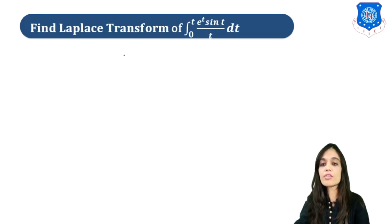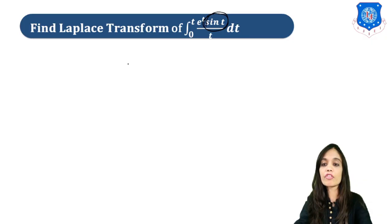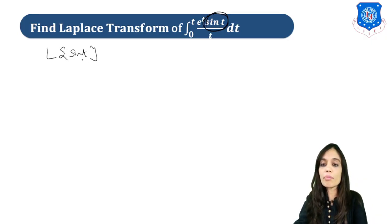Let us understand this using examples. We have to find the Laplace transform of the integral from 0 to t of e raised to t times sin(t) upon t. Ignore everything and just find the Laplace of sin(t) first — go step by step, this is an important problem. Laplace of sin(t) equals 1 upon s squared plus 1.